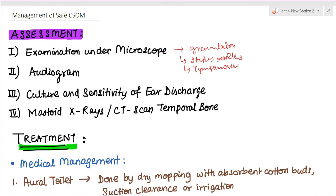We can do audiogram to see the type and degree of hearing loss. We also do culture and sensitivity of the ear discharge to see what type of organism is there and what antibiotics should be used. We can also do mastoid x-rays and CT scan, though it's not so important in safe CSOM but very important in unsafe CSOM to see if there is necrosis of the bone.